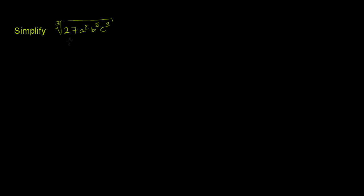We're asked to simplify the cube root of 27a squared times b to the fifth times c to the third power. The goal whenever you try to simplify a cube root like this is to look at the parts of this expression that are perfect cubes — something raised to the third power — take the cube root of those, essentially taking them out of the radical sign, and leaving everything else that is not a perfect cube inside of it.